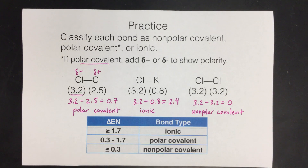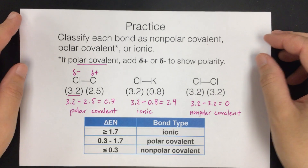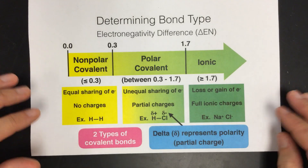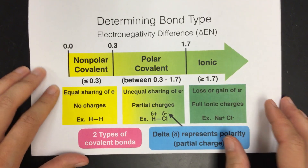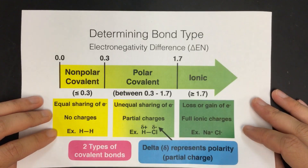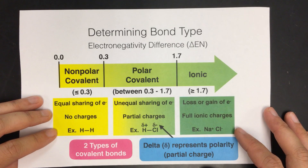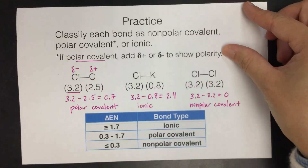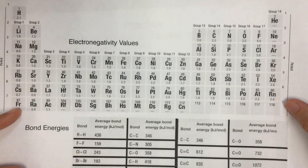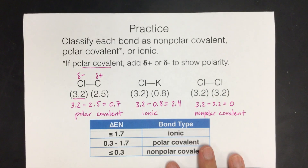We wouldn't show polarity because neither atom is more negative than the other — the electrons are shared equally. So those are examples from your notes on how to differentiate between non-polar covalent, polar covalent, and ionic. On your test you'll want a table or reference image. Just remember to subtract electronegativities, and if the values aren't given, look them up on a table.